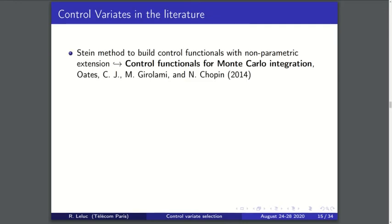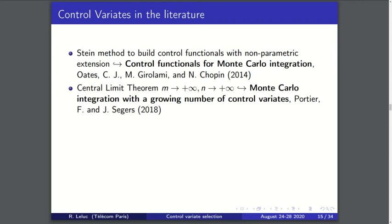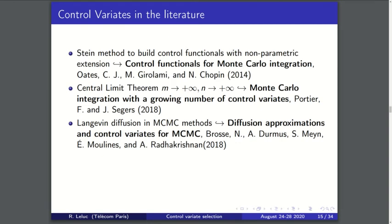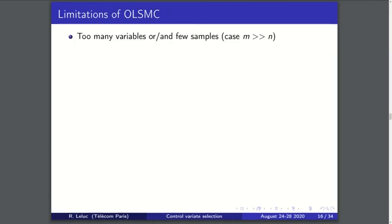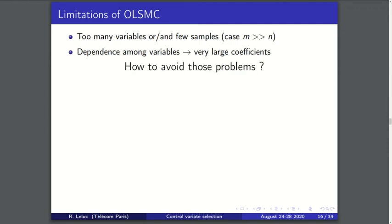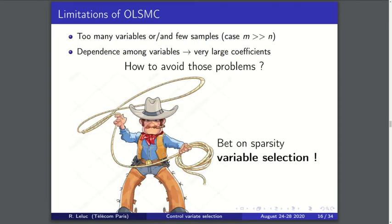For the control variates in the literature, there are some techniques to build control variates. There was some work on a growing number of control variates where the number m of control variates tends to infinity as well as the sample size n. Recently some authors suggested the idea to add some regularization to this linear regression problem, and this is the purpose of this talk, because the OLS estimate suffers from drawbacks. When there are too many variables compared to the sample size, or when there is some multi-collinearity, this yields very large coefficients in the solution β. To avoid this problem, we can bet on sparsity and use the lasso to perform some feature selection.